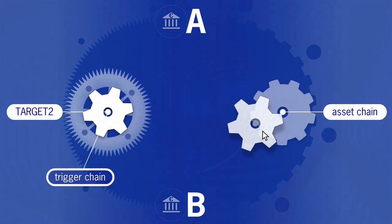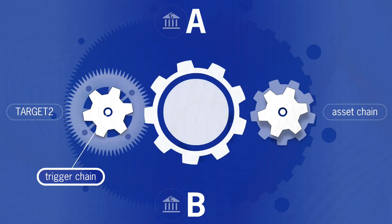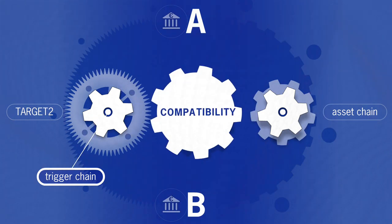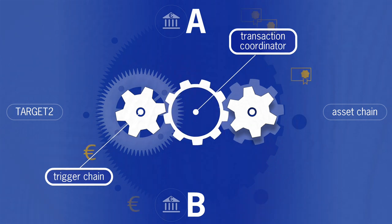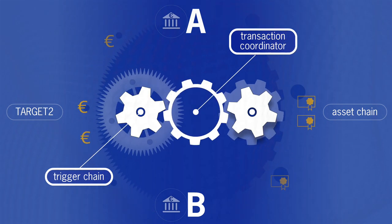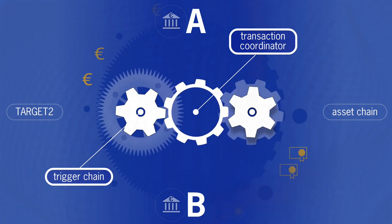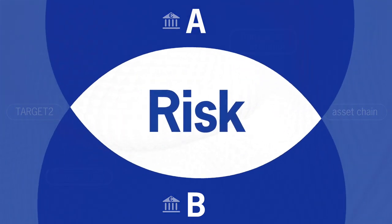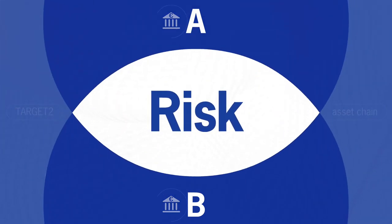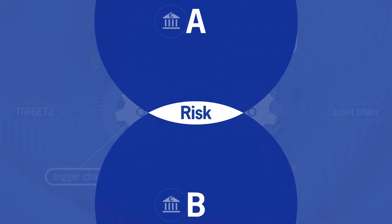A trigger chain connects the central bank payment system TARGET2 with the DLT world and triggers the payments. The transaction coordinator then synchronizes the asset chain and the trigger chain to initiate payment if and only if the assets change ownership. The resulting and well-proven delivery versus payment settlement minimizes the counterparty risk for all market participants.